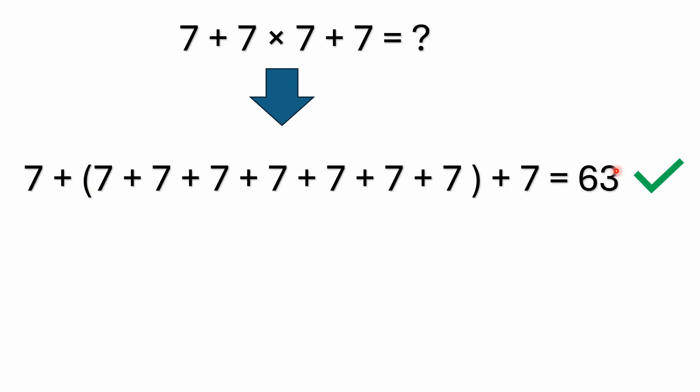Again, these parentheses are not necessary. I just added them for clarification just to show that I'm replacing everything inside of these parentheses. This is replacing the multiplication. So it's seven plus adding seven sevens and then plus the other seven here. That's going to equal 63.